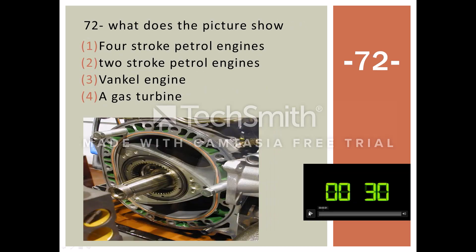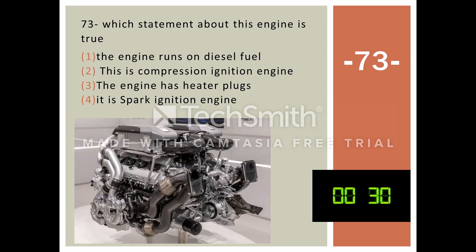Question 72. What does the picture show? Options: Four-stroke petrol engine, 2-stroke petrol engine, 3-stroke petrol engine. Question 73. Which statement about this engine is true? Options: The engine runs on diesel fuel. This is a compression ignition engine. The engine has heater plugs. It is a spark ignition engine.